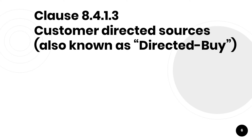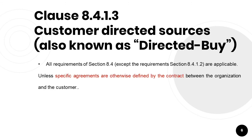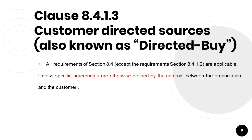The next clause is 8.4.1.3, which explains the requirement of customer-directed sources, also known as directed-buy. It states that when specified by the customer, the organization shall purchase products, materials or services from customer-directed sources. All the requirements of section 8.4, except 8.4.1.2 which is the supplier selection process, are applicable, unless specific agreements are otherwise defined by the contract between the organization and the customer.